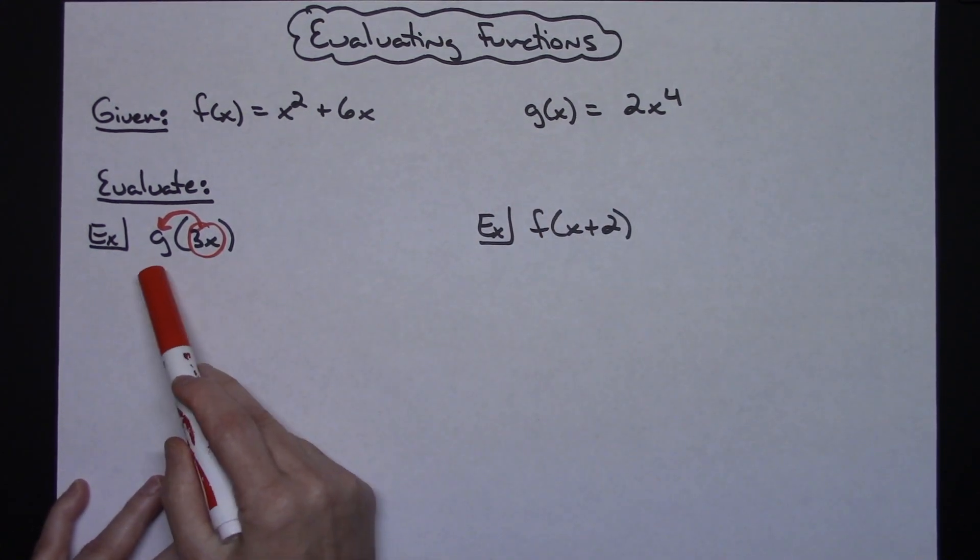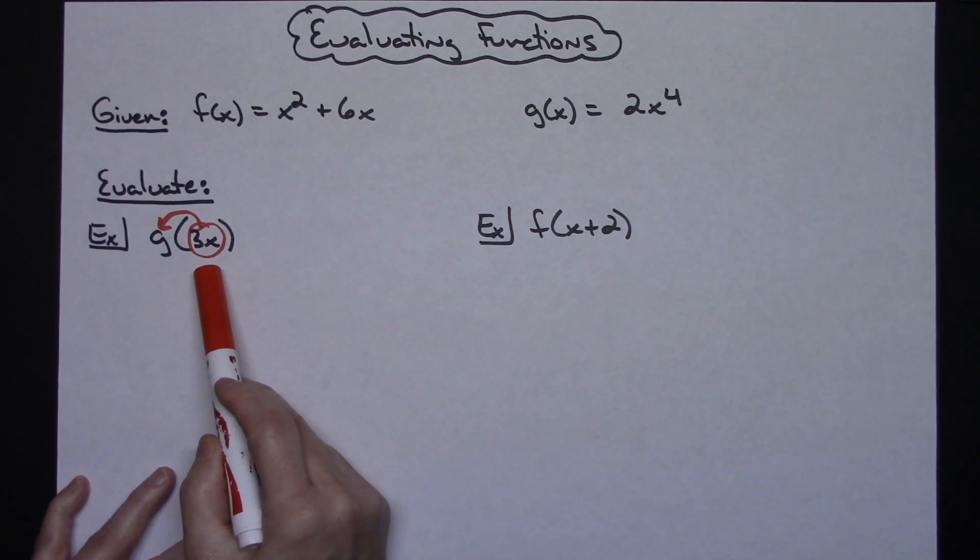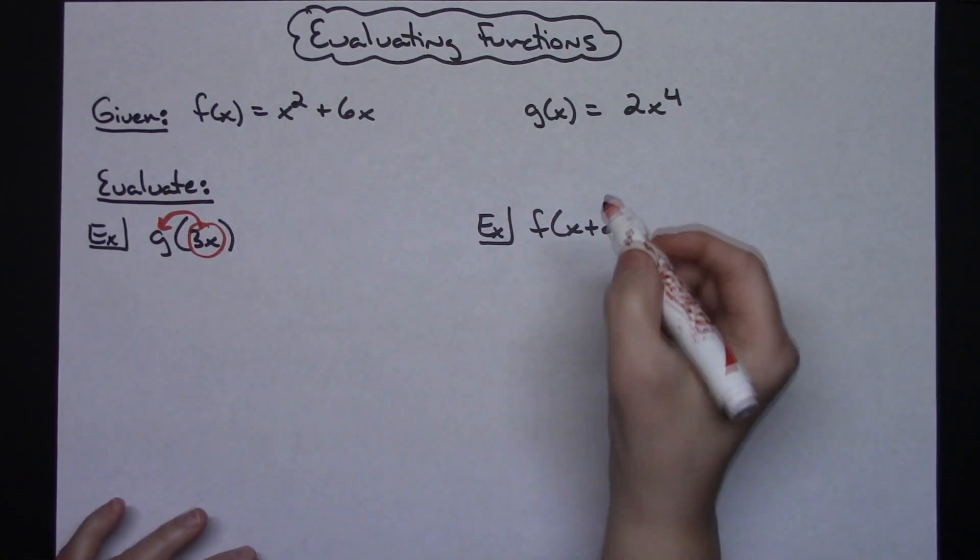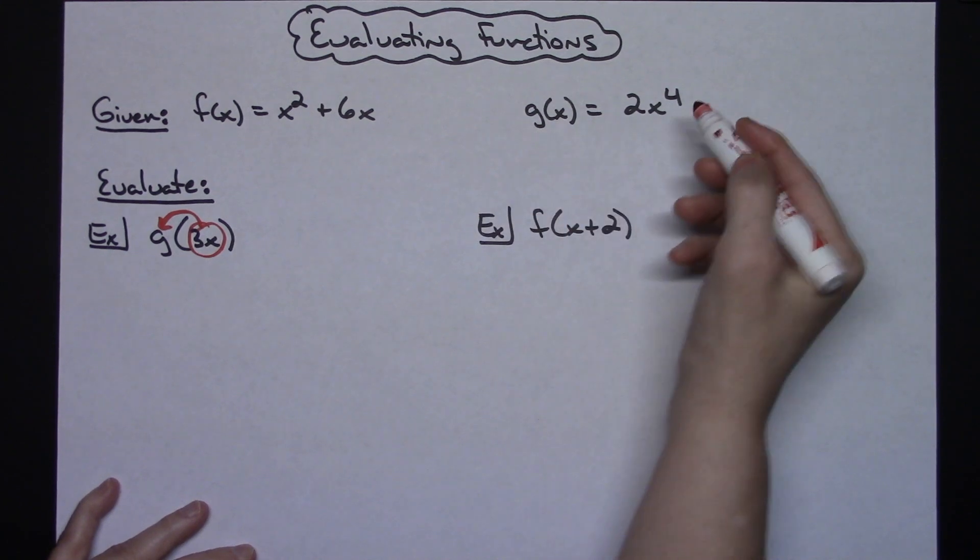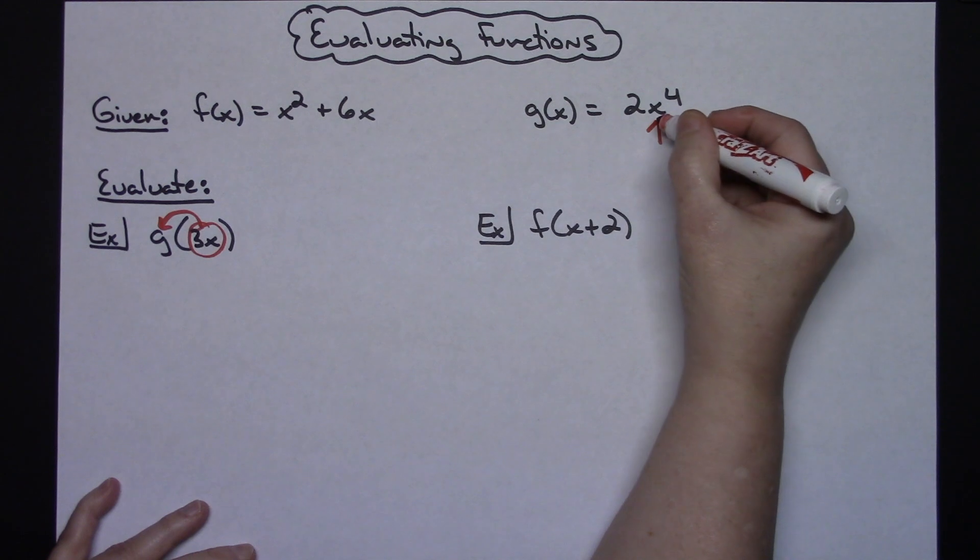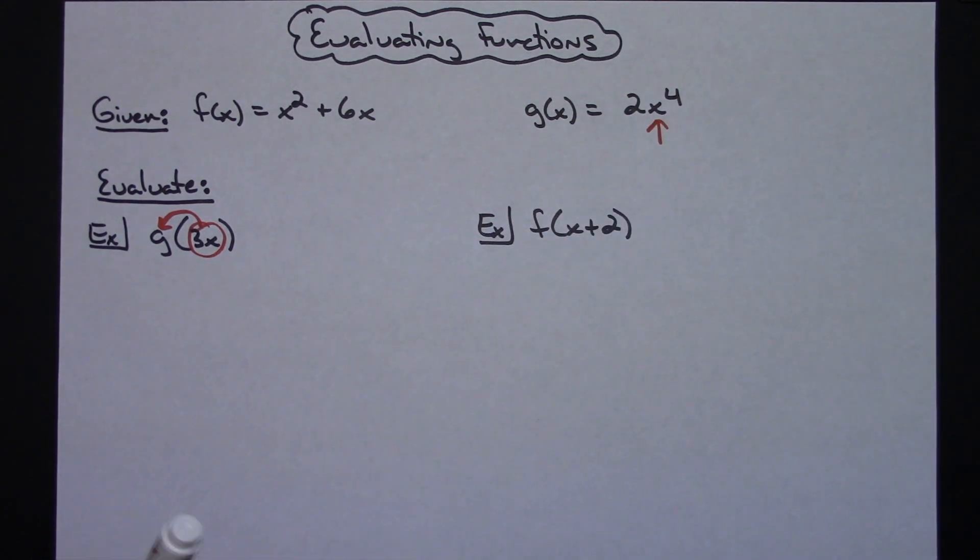This notation g(3x) is telling me to take that 3x and plug it into that g function. I'm going to look at my g function and I'm going to see only one x right there. So that means that's the only place that I'm going to have to plug it in at.